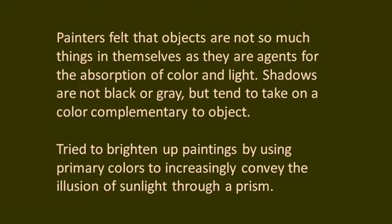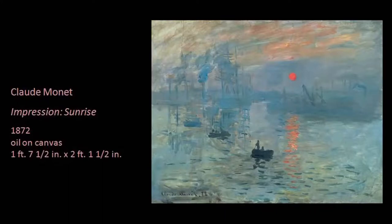The fact that light can actually create form — that light can be considered as a component of form — was something new in the history of painting, and Impressionists were trying to do precisely that. Impressionist painters felt that objects are not so much pleasing in themselves as they are agents for the adoption of colour and light. They probably took this idea from the latest developments in optical science. So shadows are not black or grey, but tend to take on a colour complementing the surrounding landscape. They tried to brighten paintings by using primary colours to increasingly convey the illusion of sunlight.